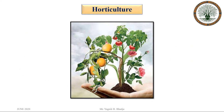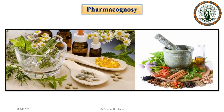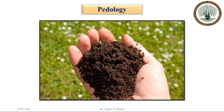Another branch is horticulture, which is the science dealing with the study of flowering and fruit plants. Another branch is pharmacognosy, which is the branch of science dealing with medicinal plants. Another branch is pedology, which is the science dealing with the study of soils.